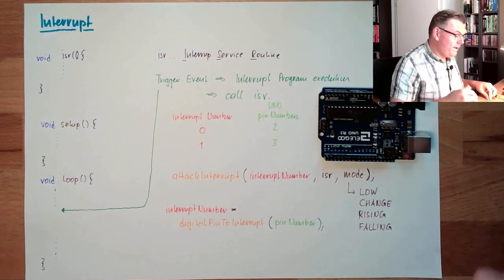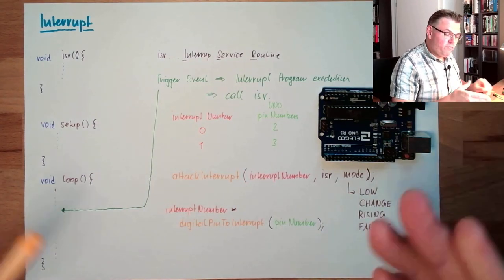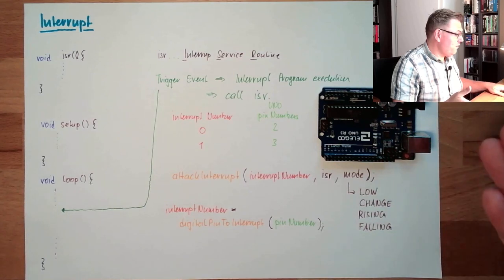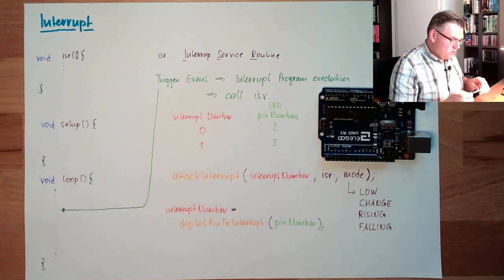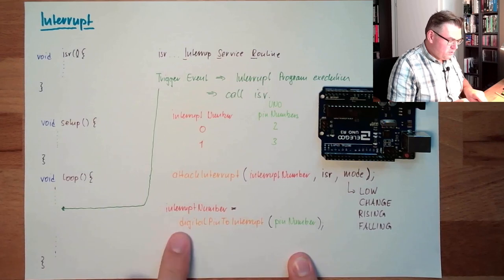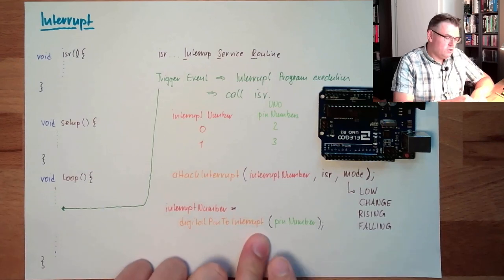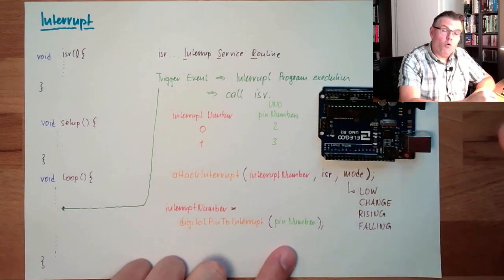If I am compiling this for a different Arduino board, then the interrupt number is automatically changed by this digital pin to interrupt, because the compiler knows for which board we are compiling.